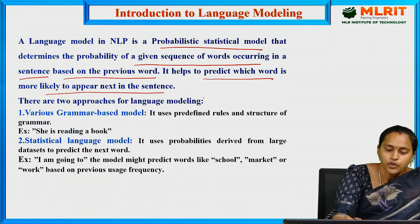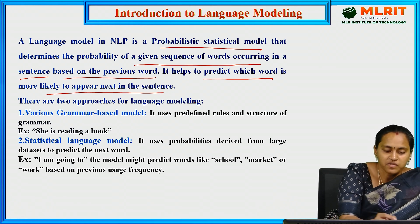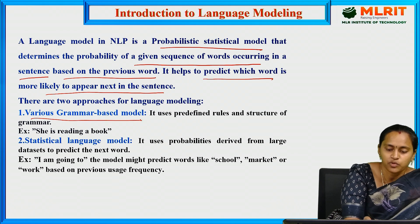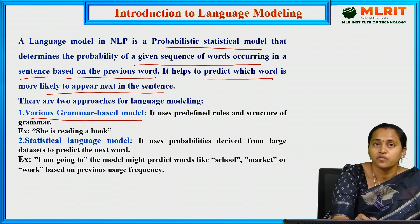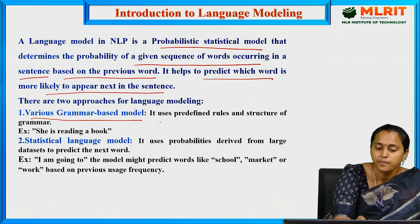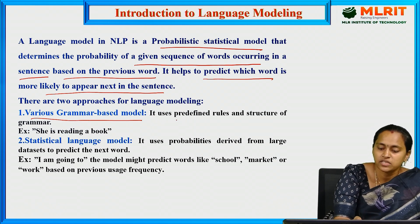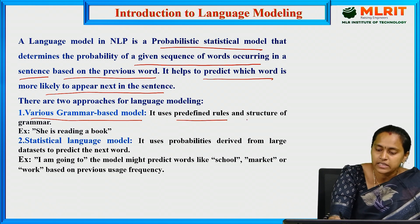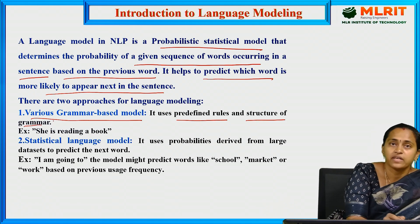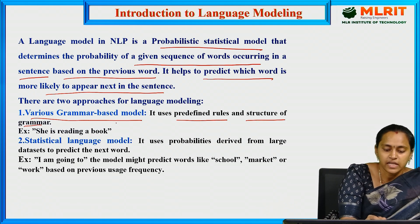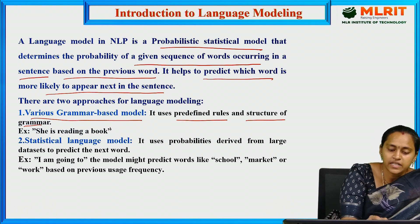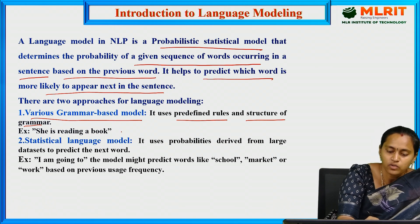It helps to predict which word is more likely to appear next in a sentence — that means the frequency of the word. There are two approaches for language modeling. The first is the various grammar-based model, which uses predefined rules and structure of the grammar. For example, 'She is reading a book' is a correct sentence — it follows the rules and structure of grammar.